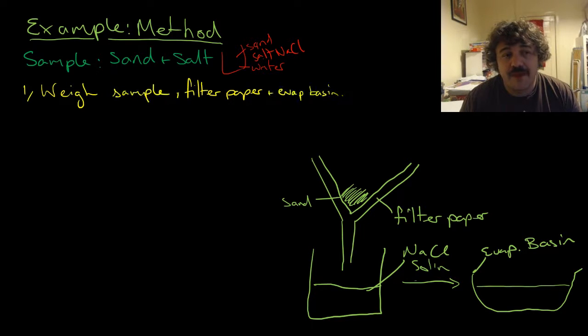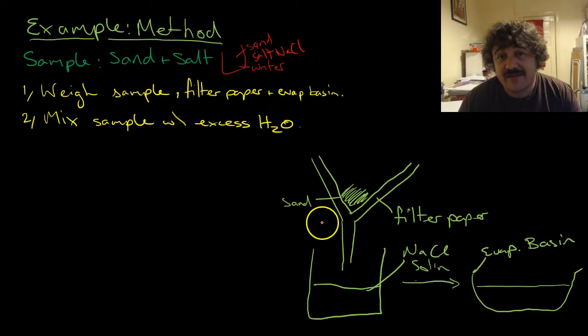We want to separate this sand and salt mixture into its component ingredients and work out what percentage was sand, what percentage was salt. So our first job - this is the practical method. You will weigh the sample, the filter paper, and the evaporating basin. So the filter paper, the evaporating basin empty, and the sample. You mix the sample with excess H2O.